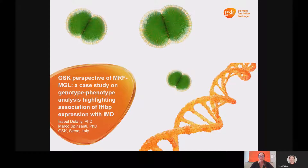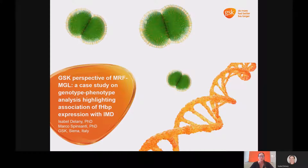I personally arrived here to Siena more than 20 years ago into the Vaccines Research Centre when the first Meningococcal genome, MC58, was being sequenced for a big discovery project for new protein antigens for the Serogroup B vaccine using the infamous reverse vaccinology approach.